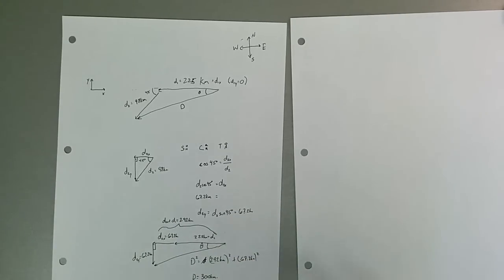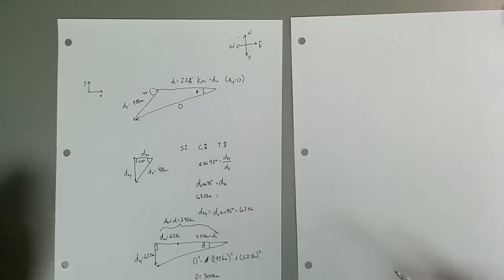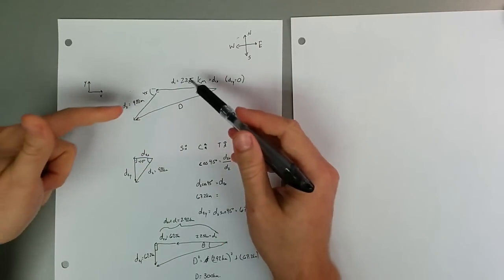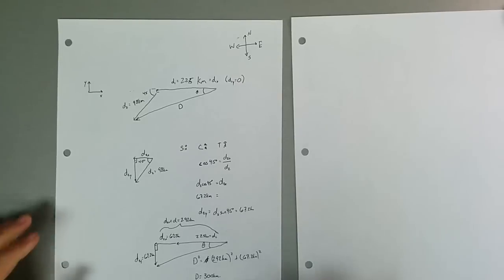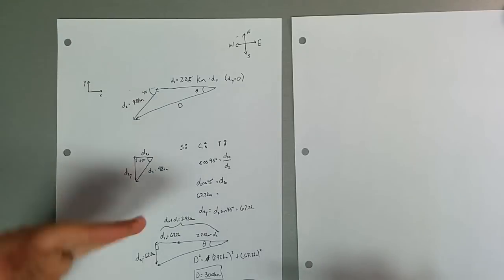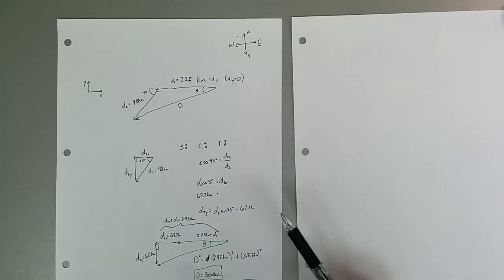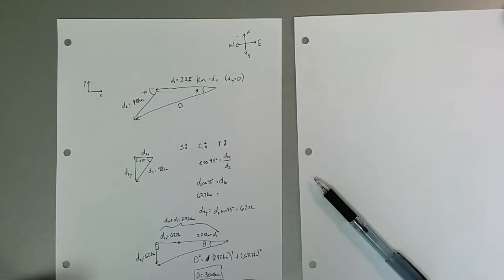This all makes sense. 300 kilometers is bigger than any of our sides, 225 or 98, but it's not any bigger than both of them added together, which would be how big it would be if they were both in line with each other. So the 300 kilometers makes sense, and the 12.9 makes sense. It's less than 45 degrees, but more than zero. I hope that helps, and good luck with it, and we'll see you in next class.